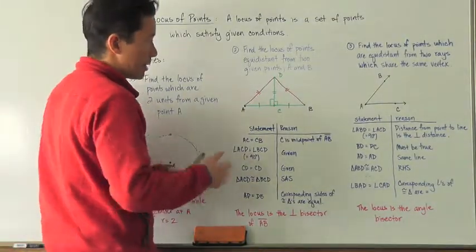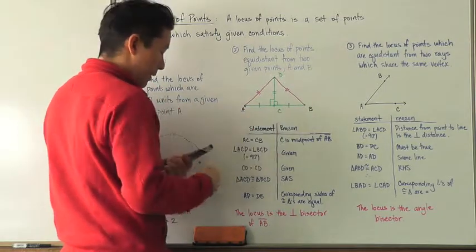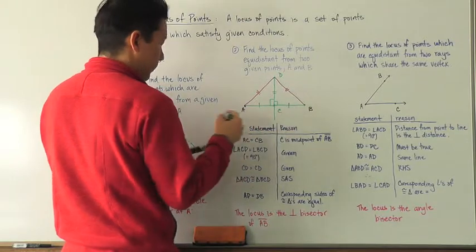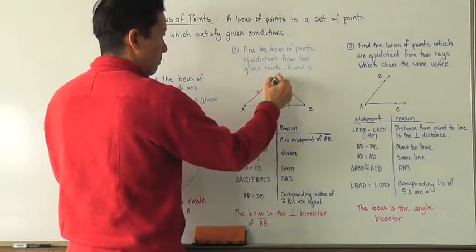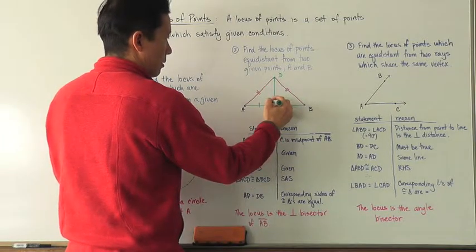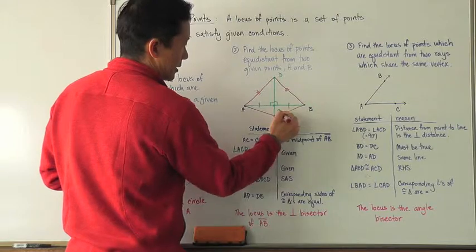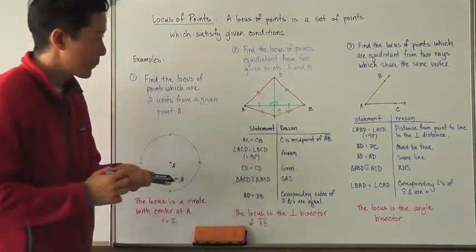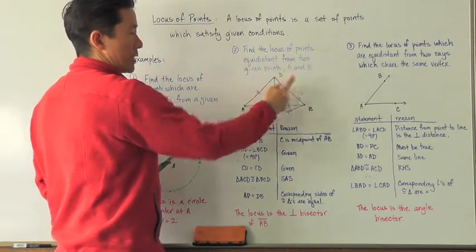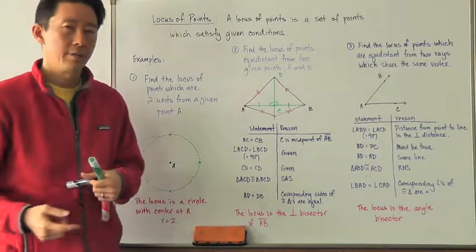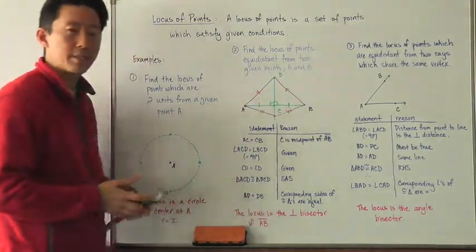So, regardless of where D is, so long as it is on the line that is perpendicular and through the midpoint of line segment AB, any point I draw — I could put D anywhere on that line and draw lines to A and B — those distances would be equal as well. So I now know exactly where all of these points are which are equidistant from two given points A and B, and that is the perpendicular bisector of line segment AB. The locus of points equidistant from two given points A and B is the perpendicular bisector of line segment AB.